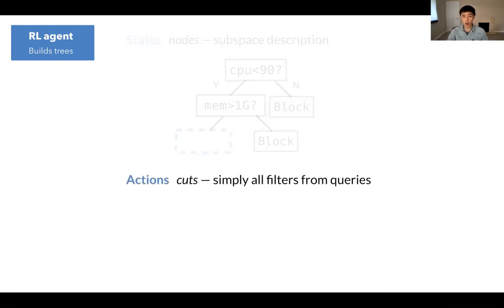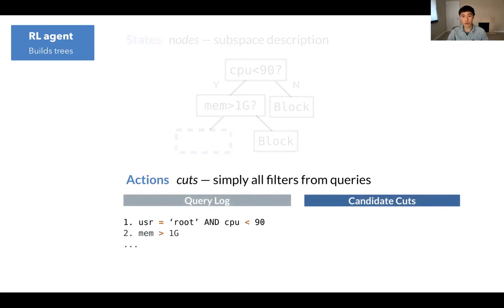The actions in our problem are just the cuts to make on the nodes. And we take a very simple solution here where we include all filters found in the query log. So here's an example. Let's say we have two queries in the query log. We're just going to loop through the queries and figure out what are the pushdown filters and add it to the candidate cut set one by one.